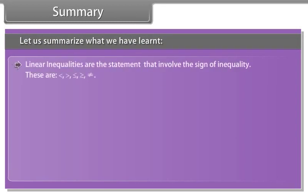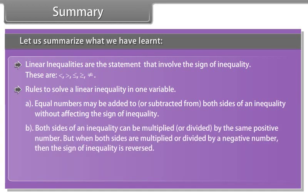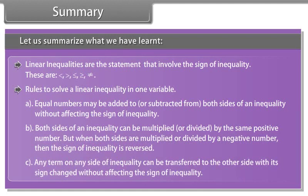Summary: Let us summarize what we have learned. Linear inequalities are statements that involve the sign of inequality: less than, greater than, less than or equal, greater than or equal, and not equal. Rules to solve a linear inequality in one variable — A: Equal numbers may be added to or subtracted from both sides without affecting the sign of inequality. B: Both sides can be multiplied or divided by the same positive number, but dividing by a negative number reverses the sign. C: Any term can be transferred to the other side with its sign changed without affecting the sign of inequality.